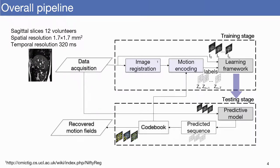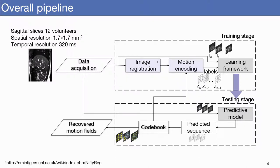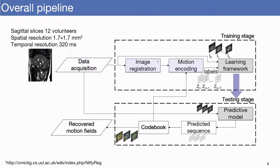Before actual training, the first step was label creation. Consecutive pairs of images were non-rigidly registered using NiftyREG. Then the displacement fields corresponding to each motion plane were quantized into five bins. We then construct a codebook to assign a motion class to each one of the possible bin combinations, for a total of 25 classes.